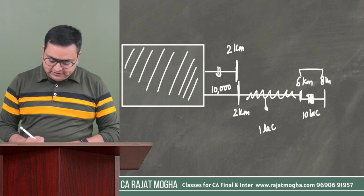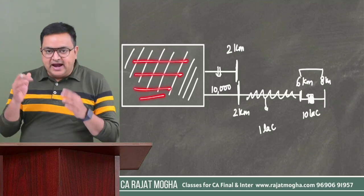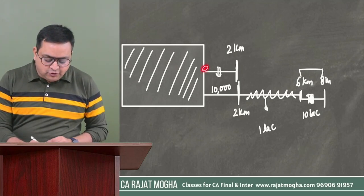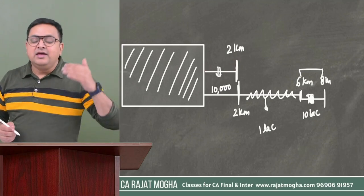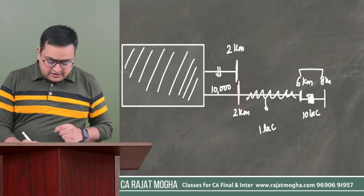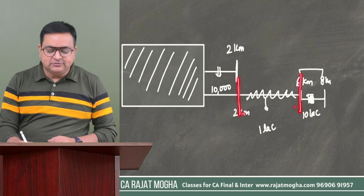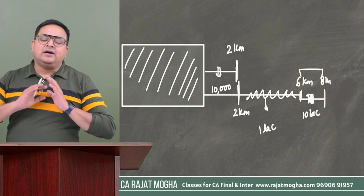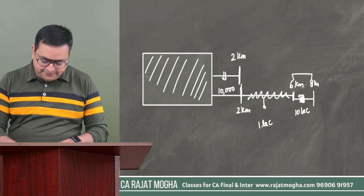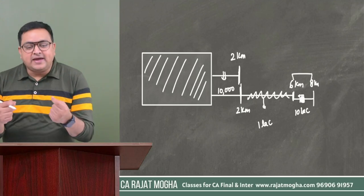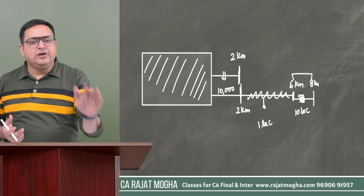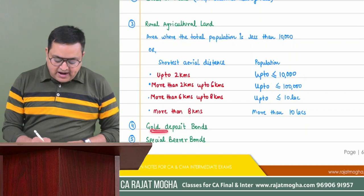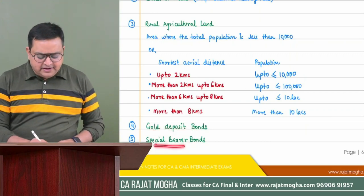If the land is situated beyond 8 kilometers from the municipal limit, there is no need to check the population — it will always be rural agriculture land. To summarize: within municipal limits — urban; 0–2 km outside, population up to 10,000 — rural; 2–6 km, population up to 1 lakh — rural; 6–8 km, population up to 10 lakh — rural; beyond 8 km — always rural. Rural agriculture land is not a capital asset, so capital gain will not arise on its transfer.